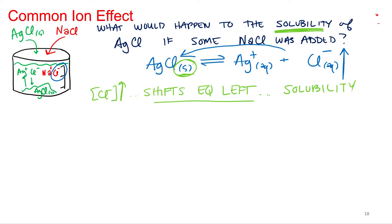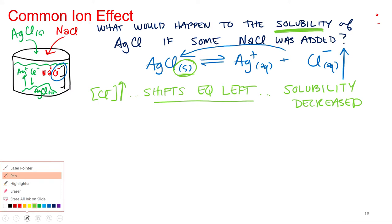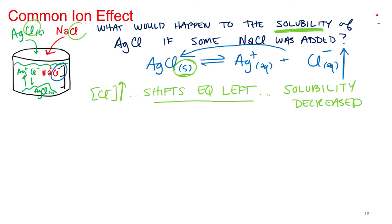The solid has increased. All of this is just an application of Le Chatelier's principle, and the name 'common ion effect' comes from the fact that chloride is present in both compounds — silver chloride and sodium chloride. It's common among both compounds, and it impacts the equilibrium.